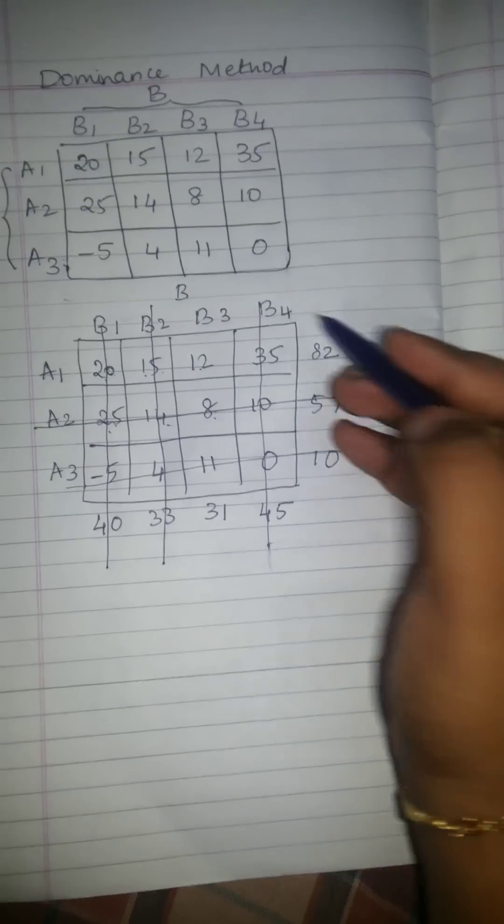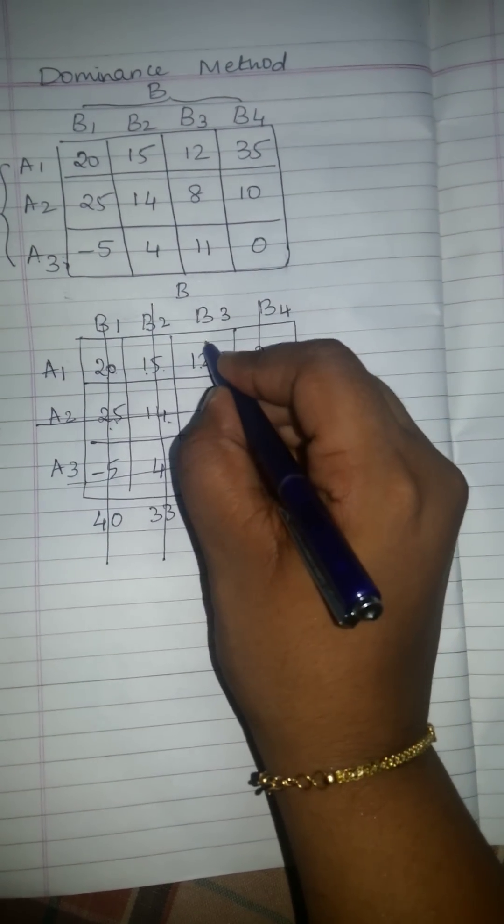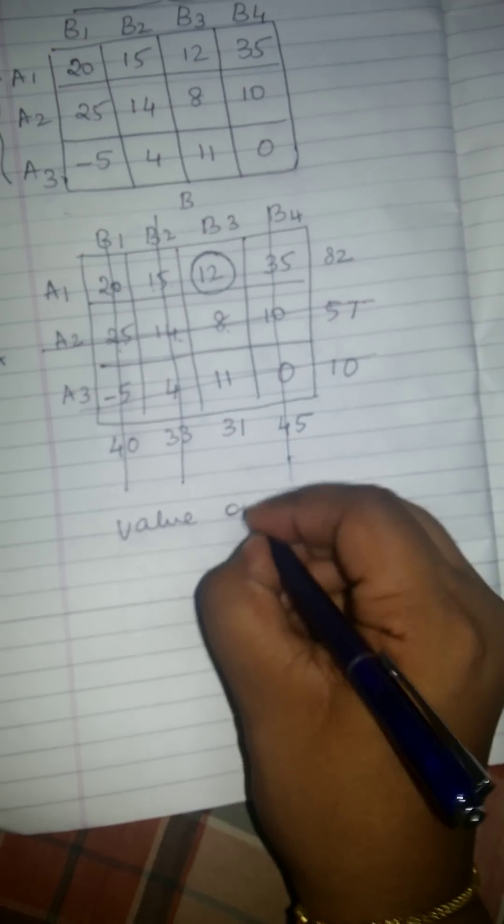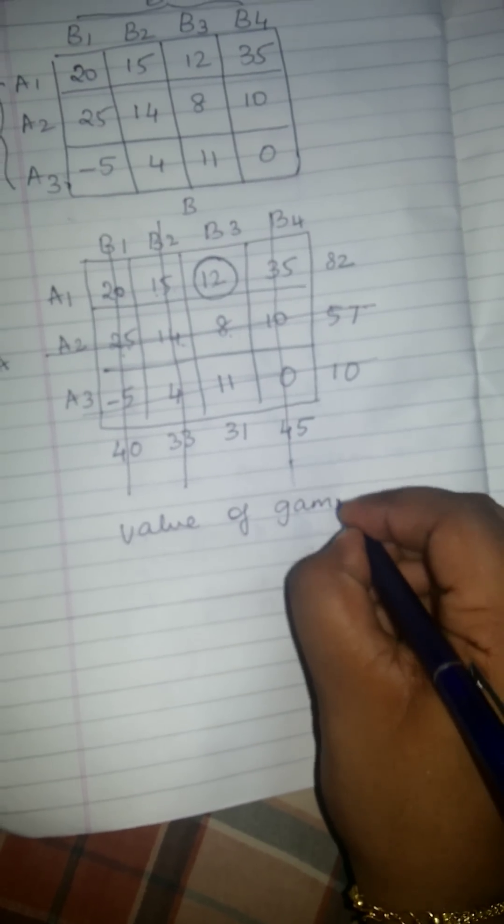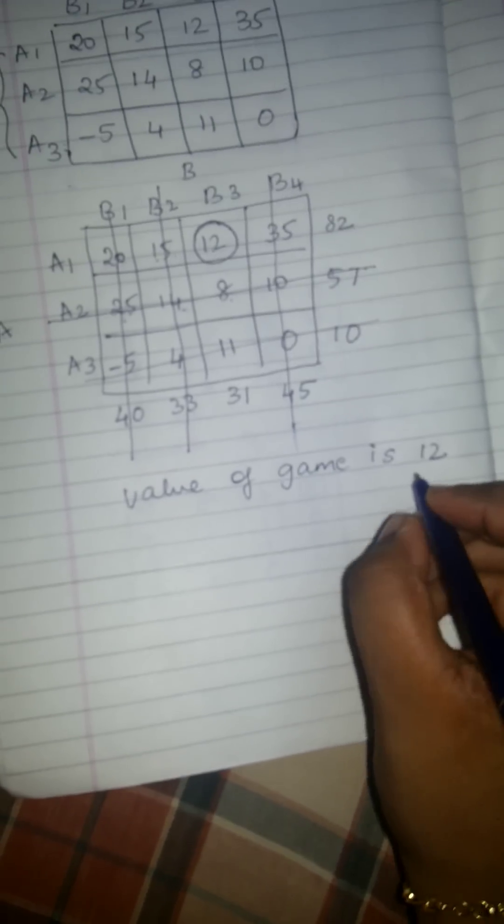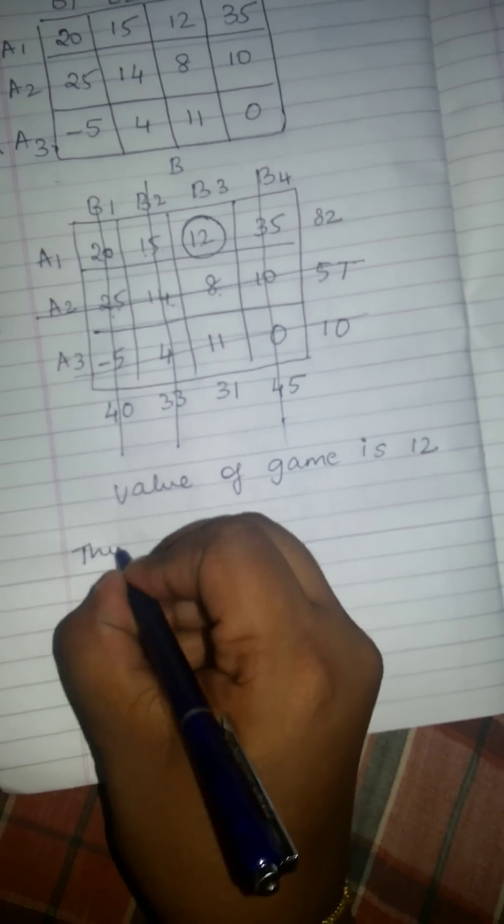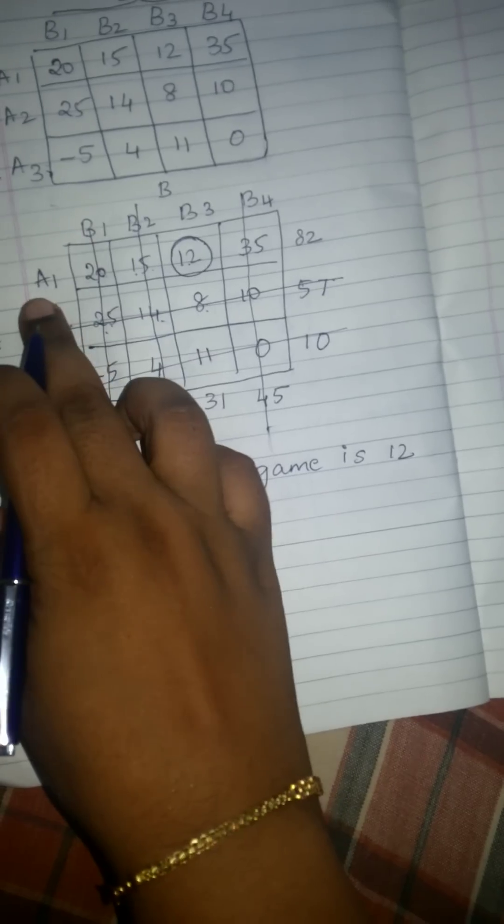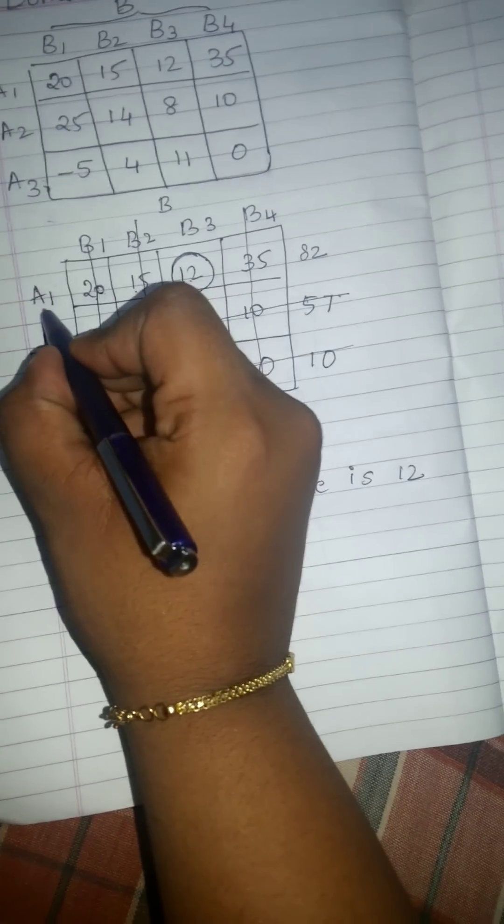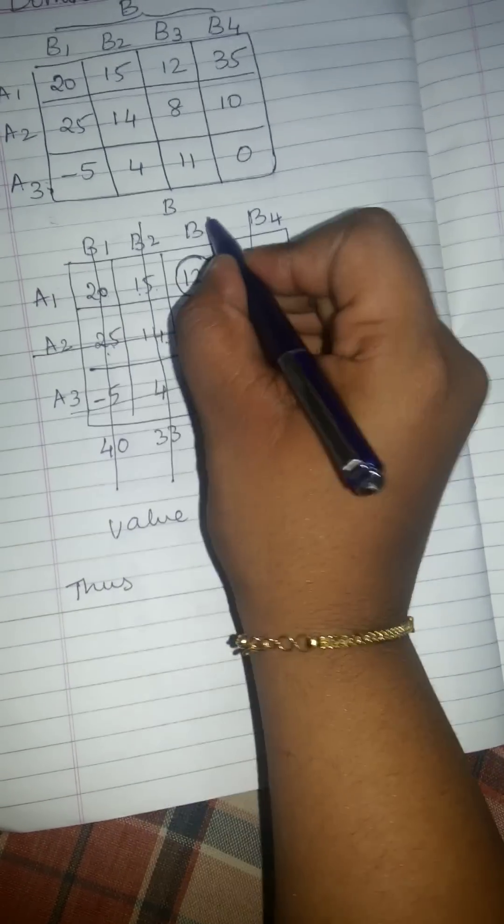Now it is A's turn and no other row is left. And this is the final value of this problem. Value of game is 12. Thus, here it is A1 and here it is B3. The value resulting to A1 and B3 is 12.